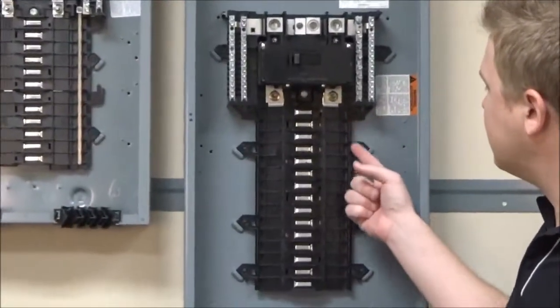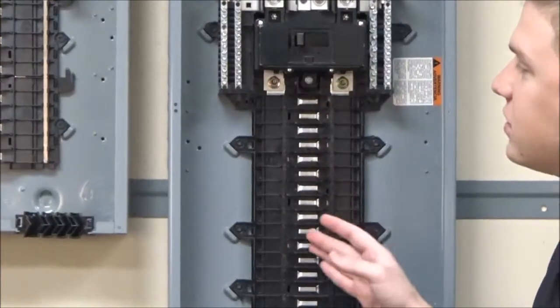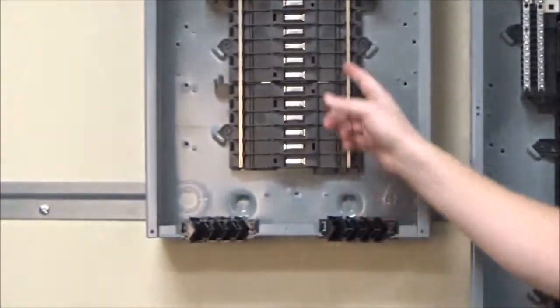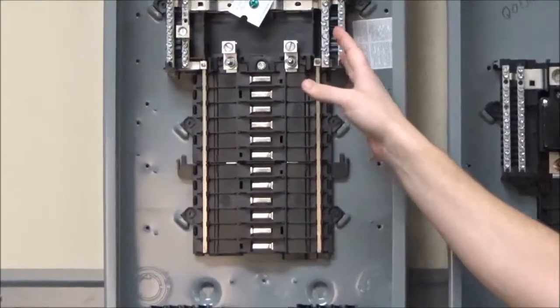the rail is the same black acrylic as the interior itself. Whereas on the plug-on neutral, it is a metallic rail that is connected to the neutral bar to form the neutral connection.